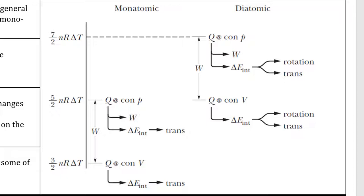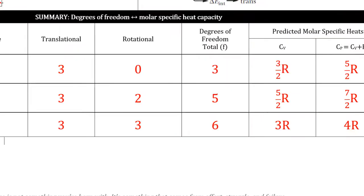Here's a single visual that summarizes a ton of information. It covers molar specific heat capacities for constant volume and constant pressure processes, and covers monoatomic and diatomic gas molecules. It also incorporates work contributions and expressions for internal energies, and points out the translational and rotational contributions. This is not an at-a-glance visual — you'll need to look at this for a long time and really think about it. Here is an all-encompassing summary of degrees of freedom for monoatomic, diatomic, and polyatomic molecules.